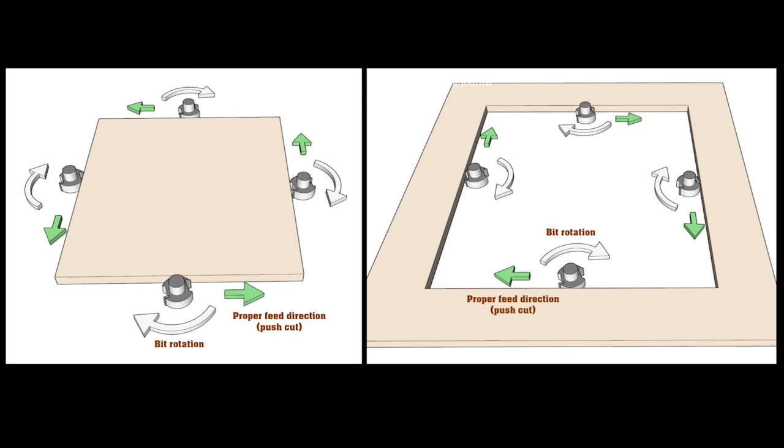Now let's further confuse matters by switching from the outer perimeter of a workpiece to an inside cutout or a frame. All those green push cut directions are now reversed because the other side of the bit is now in contact with the wood. So instead of cutting from left to right on the edge closest to you, you would work from right to left. If you were to go all the way around the opening, it would be in a clockwise direction instead of counterclockwise.